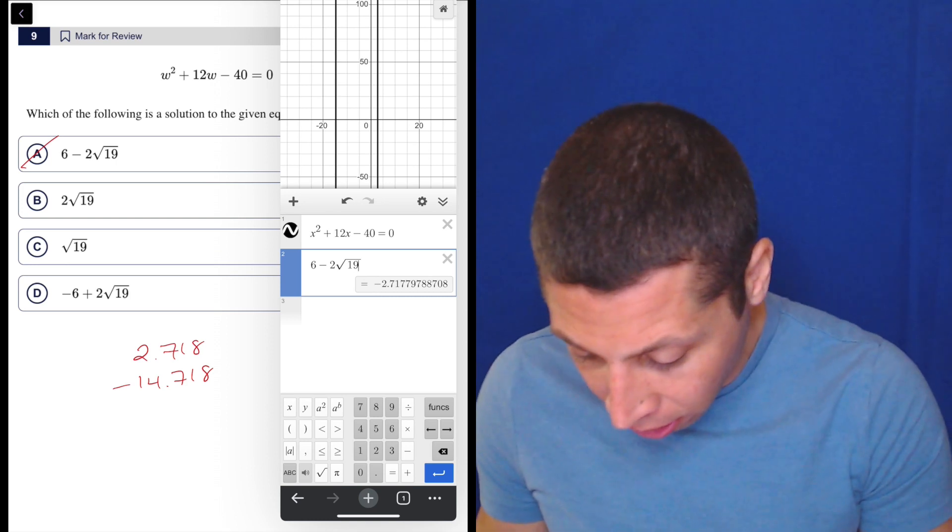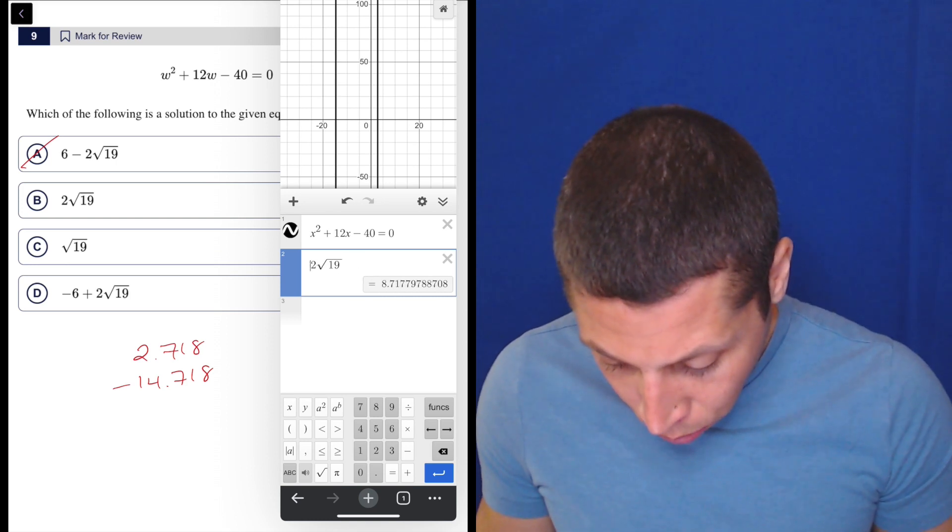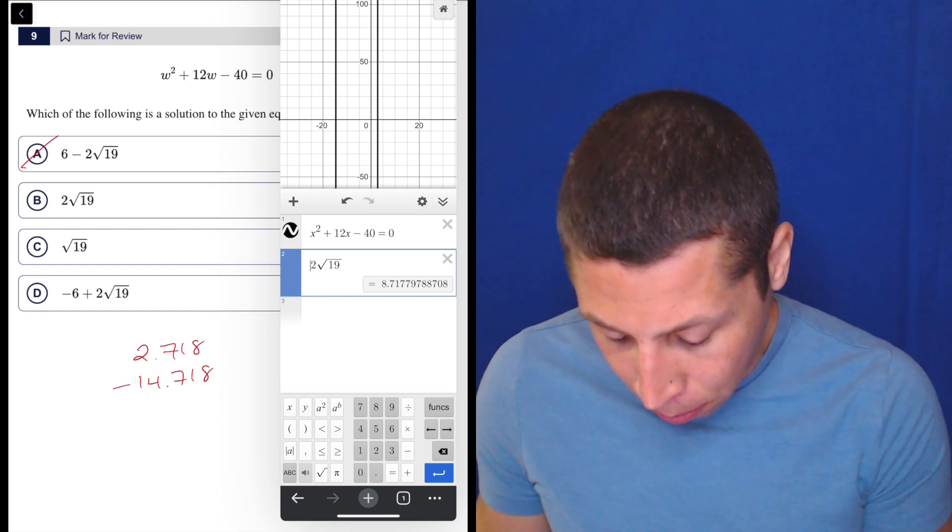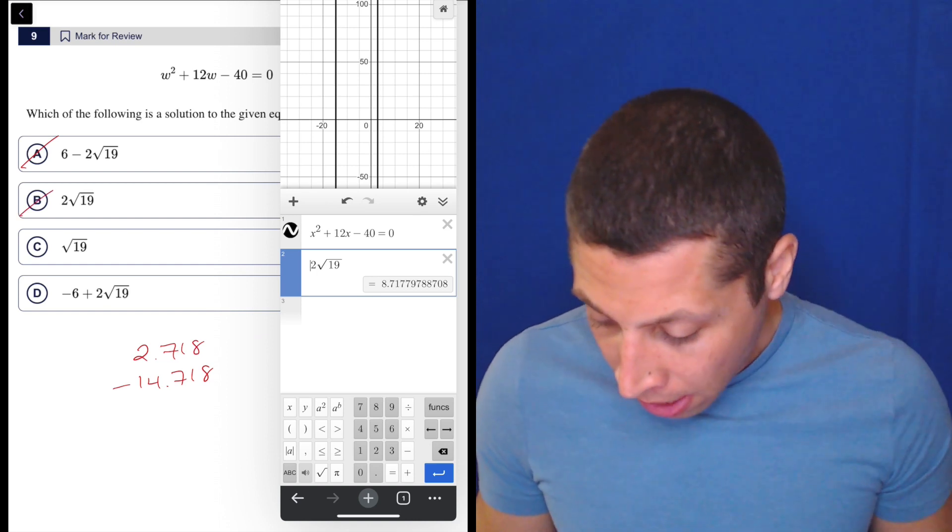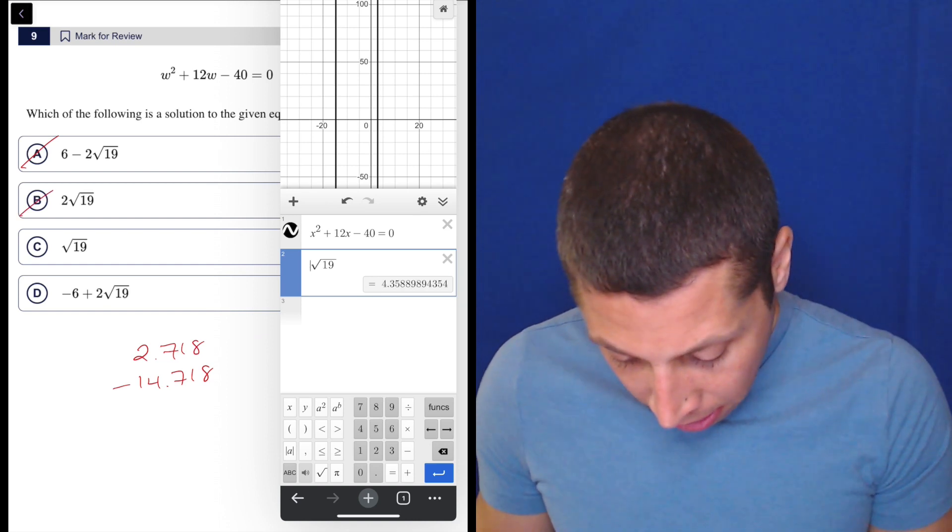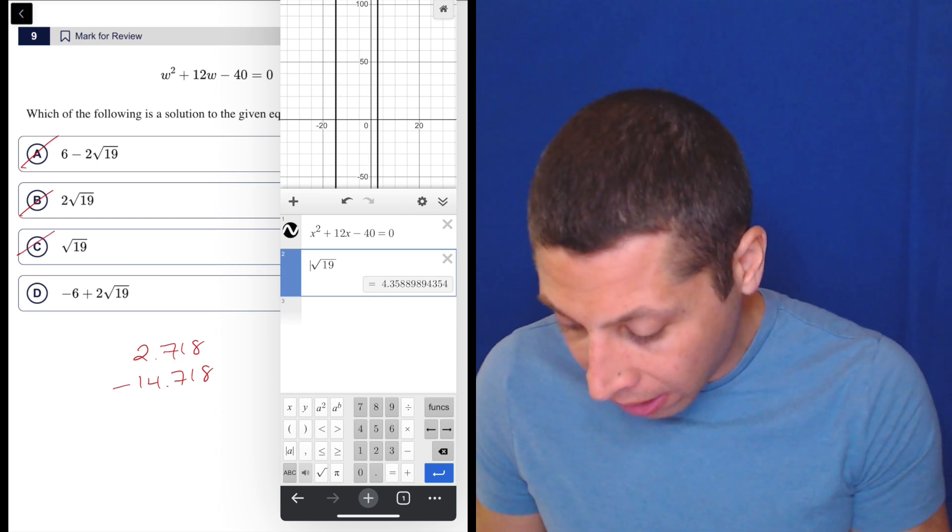So let's just continue. Let's do two radical 19 since that's right there. Well, that's 8.71. That's clearly wrong. And then radical 19 is 4.35. Well, we don't have that number anywhere. So that's wrong.